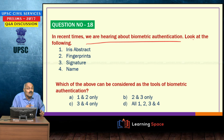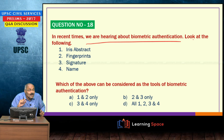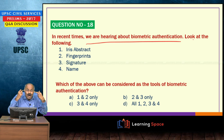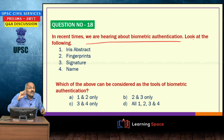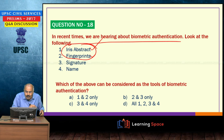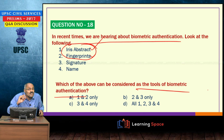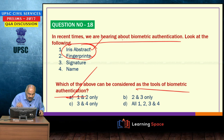In recent times we are hearing about biometric authentication. The Aadhaar number includes 10 fingerprints as well as two iris abstracts. The tools of biometric authentication under the Unique Identification Authority of India consist of iris abstracts and fingerprints, as this topic is quite frequently in the news.